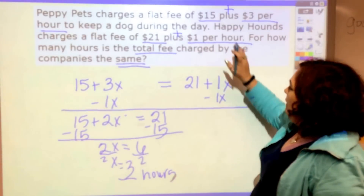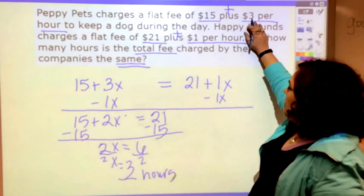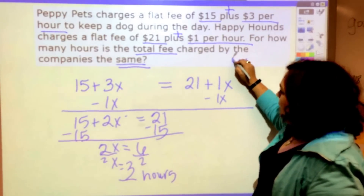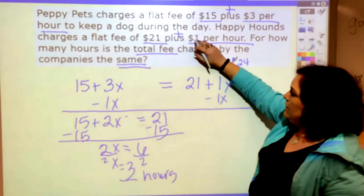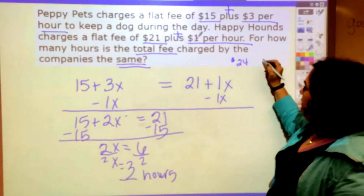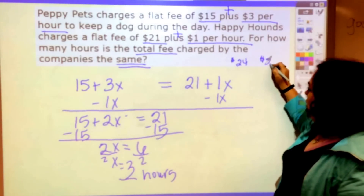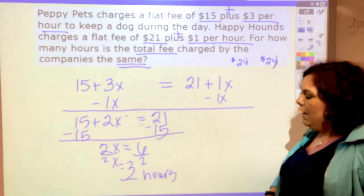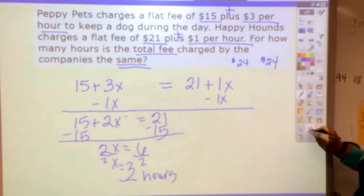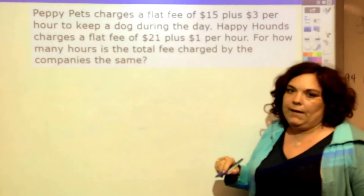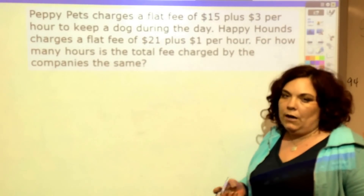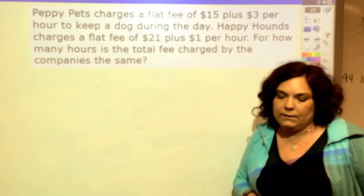Let's make sure. $15 plus $3 times 3 is $9, so that's $24 for the first one. And then $21 plus $1 times 3 is $3, giving $24. So 24 does equal 24 — if it's 3 hours, they're equal. I hope this video has been helpful on how to set up word problems to solve equations with variables on both sides.